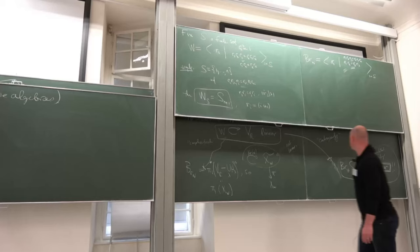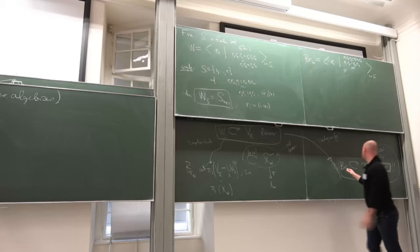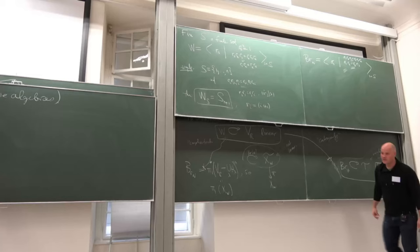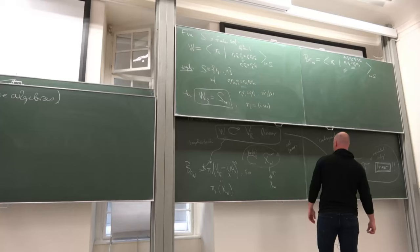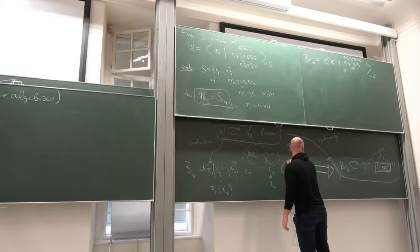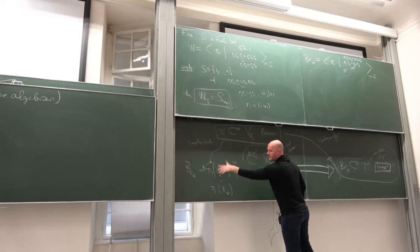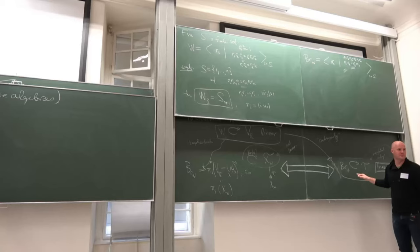These are two different ways to start from the Weyl group action on a finite-dimensional vector space and produce a braid group action on something. In one approach you get something non-linear but familiar to topologists; in the other you use homological algebra but still get something linear. These two pictures are very closely related to each other — the two ways to go from the Weyl group to the braid group, one by taking complexified hyperplane complements and doing topology, and the other by categorifying and doing homological algebra, are basically two facets of the same picture.